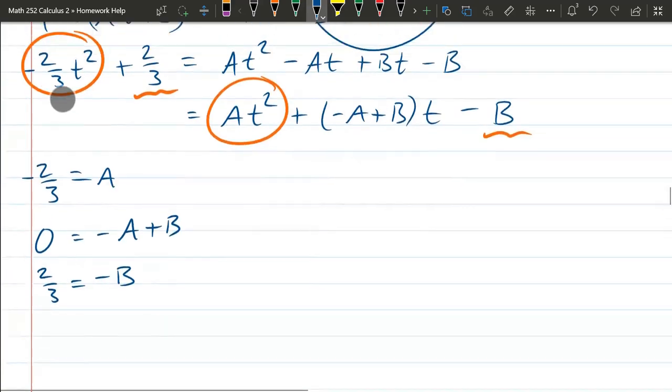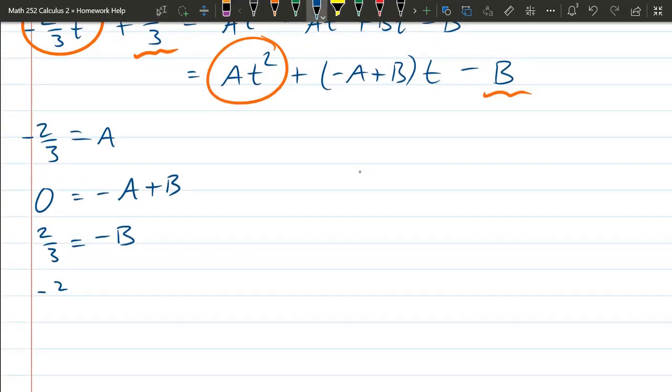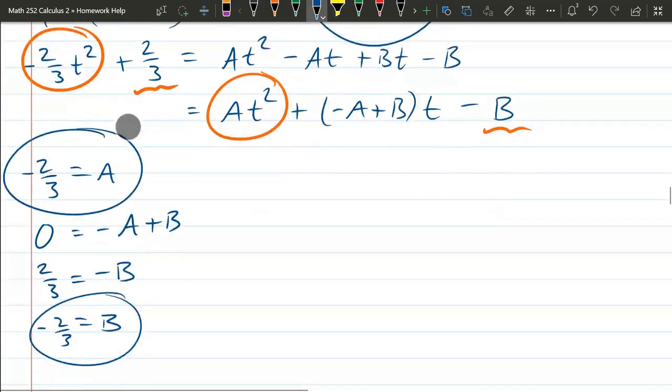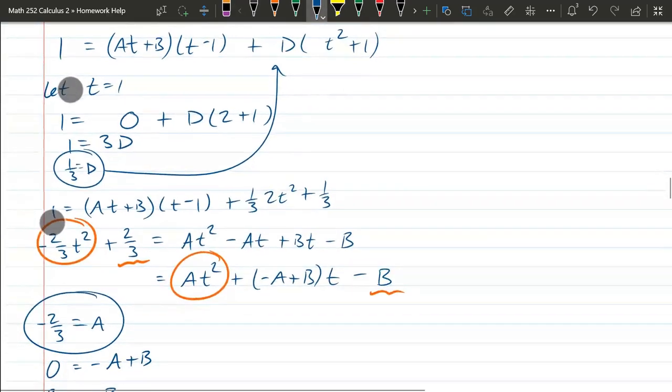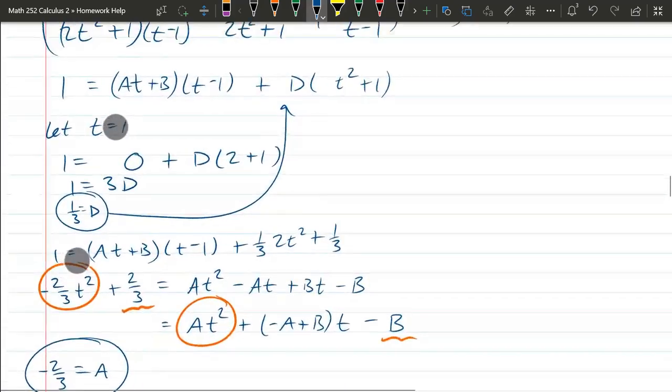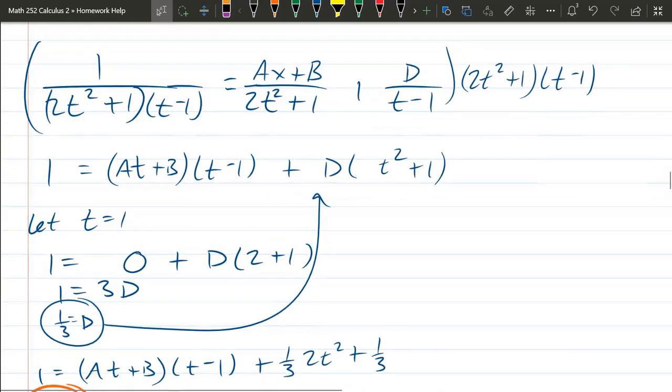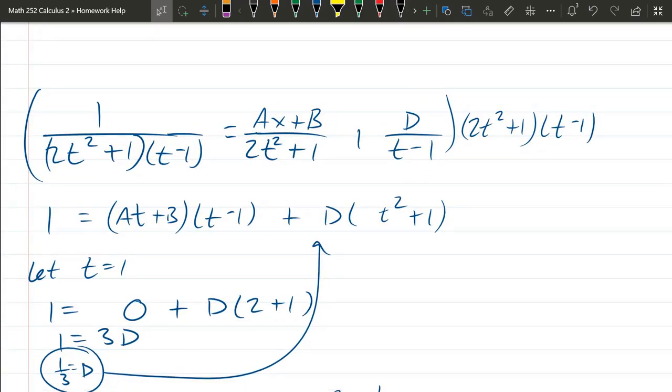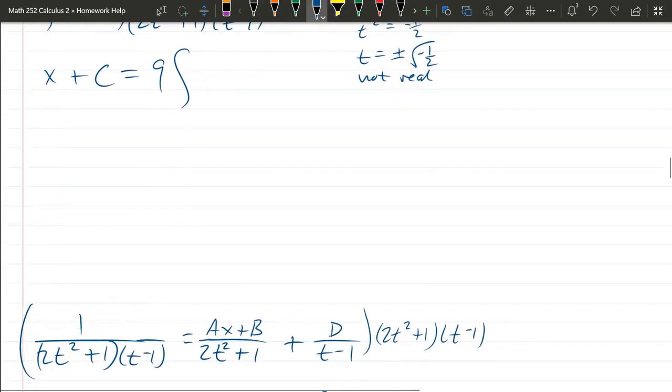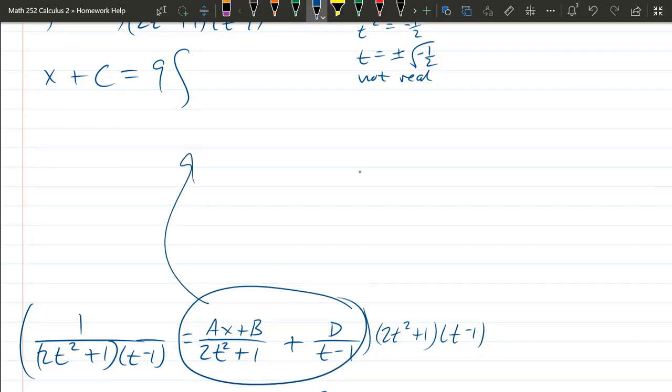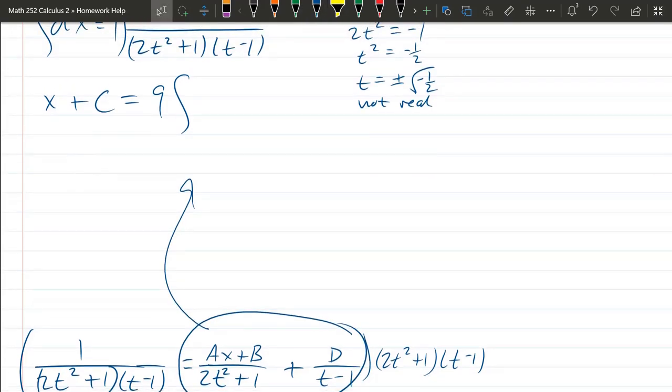So negative 2 thirds is b. We have our a, our b, and our d value. d is 1 third, a and b are negative 2 thirds. If you make one mistake, you're going to get the answer wrong. So don't make any mistakes.